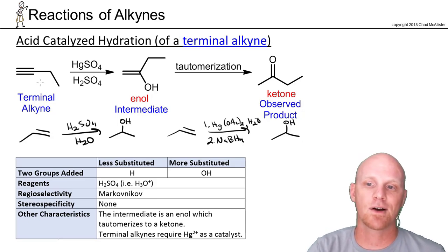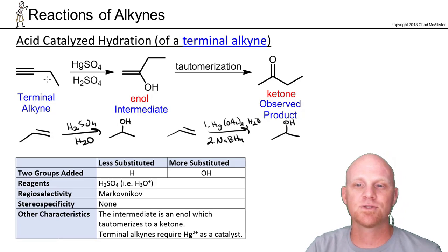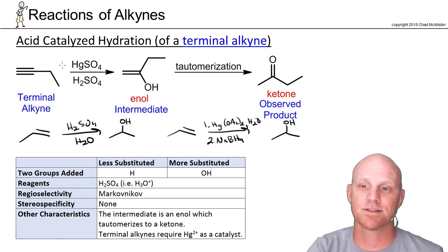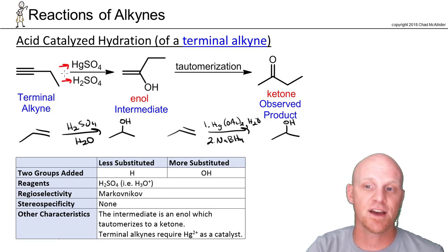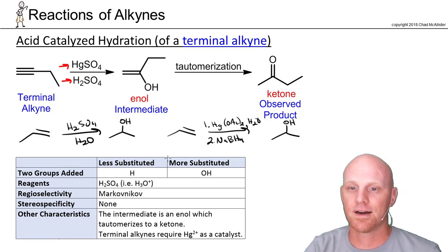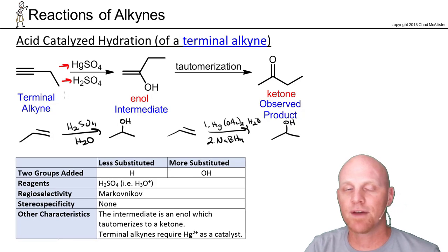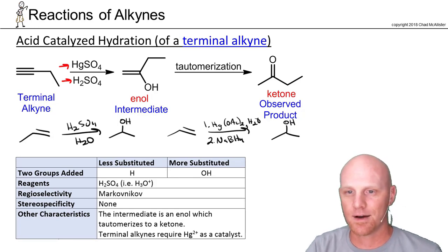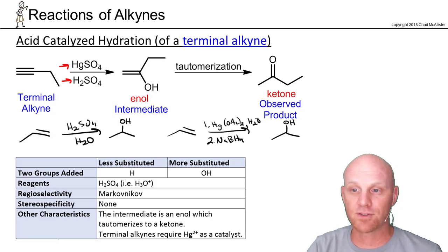The analogous reaction with alkynes uses a slightly different reagent. With a terminal alkyne, you need mercury to catalyze it, so in addition to H2SO4 you add HgSO4, or simply Hg2+ written above the arrow. In this case we add one equivalent — we never actually get a chance to add it twice. Mechanistically it's somewhat similar, minus the mercury.